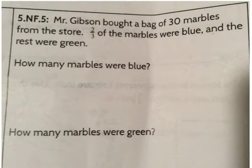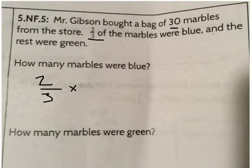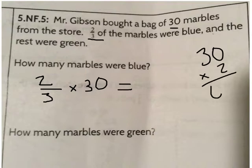Let's look at another example. Mr. Gibson bought a bag of 30 marbles from the store. Two-thirds of the marbles were blue, and the rest were green. How many marbles were blue? Well, I'm finding a fraction of a number. That means I need to multiply: two-thirds times 30. When I multiply two-thirds times 30, what's the resulting improper fraction? 30 times 2 is 60, and my denominator stays the same: 60 over 3.